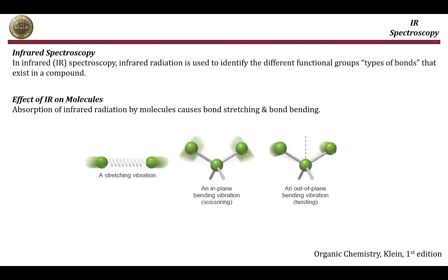There are two types of vibration. The first one is called the stretching vibration — this is basically stretching or compressing a bond just like a spring. The other type is called the in-plane bending vibration, which causes bending of the bonds in-plane. The third type is the out-of-plane bending vibration, which bends the bond out of the plane, toward or away from the viewer.